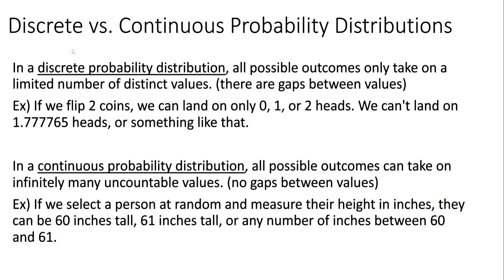Now we'll talk about discrete and continuous probability distributions. In a discrete probability distribution, all possible outcomes only take on a limited number of distinct values, meaning there are gaps between the values. For example, if we flip two coins, we can only land on zero, one, or two heads — we can't land on something like 1.77765 heads or any other numbers between one and two.